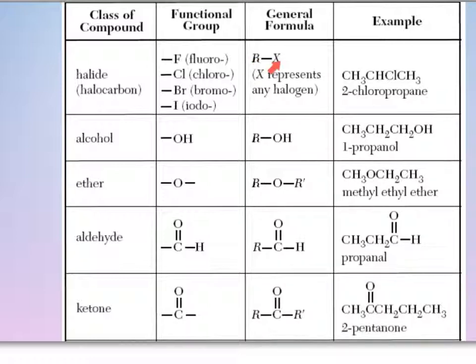But attached to it, we would have a halogen: a fluorine, chlorine, bromine, or iodine. For example, here we have a 2-chloropropane, and we've already covered how to name these in our previous videos.